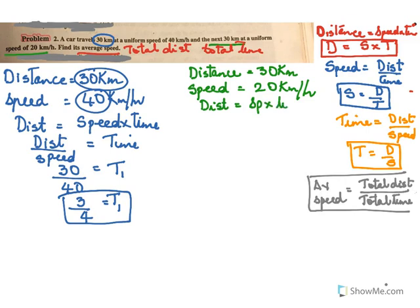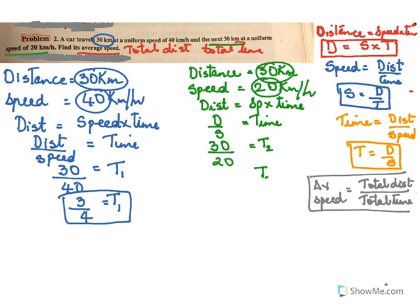Similarly, for the second section we use the same formula: time equals distance over speed. We call this t2. The distance here is 30 kilometers and the speed is 20, so t2 = 30/20 = 3/2 hours. Now remember, to find average speed we require total distance and total time.